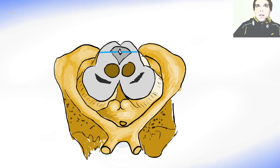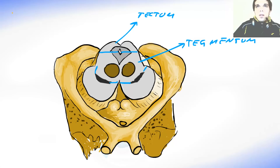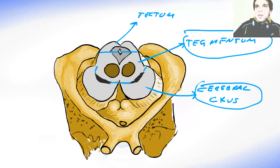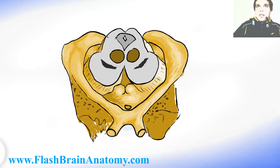This part is called the tectum. And this part over here ends close to this dark structure called the substantia nigra, and this part is called the tegmentum. The part ventral from the substantia nigra is called the crus cerebri. The tegmentum and crus cerebri together are called the cerebral peduncle. So we had the tectum, tegmentum, and the crus cerebri.